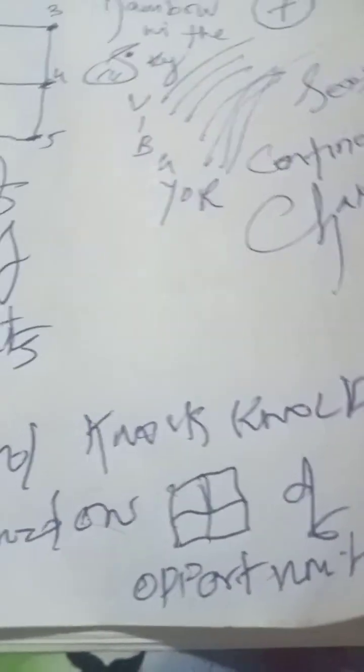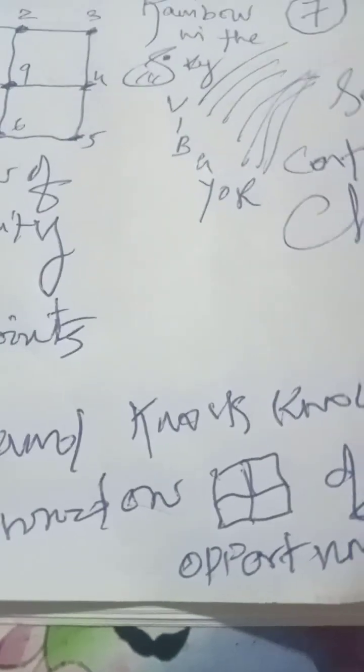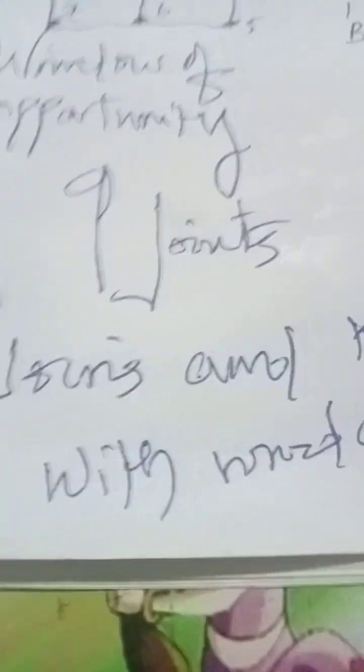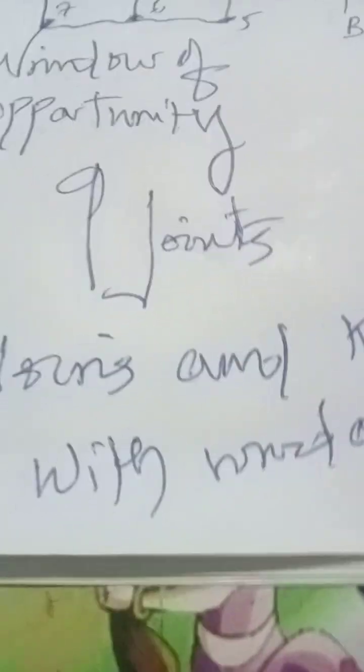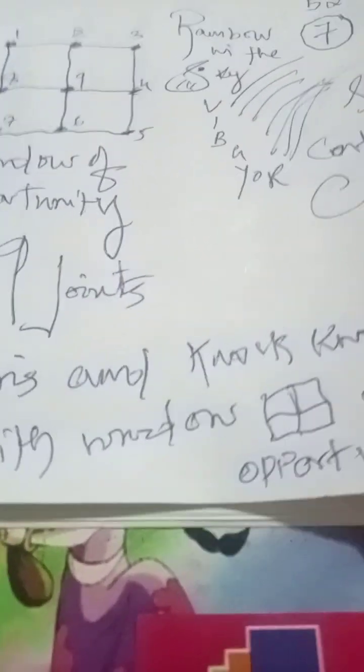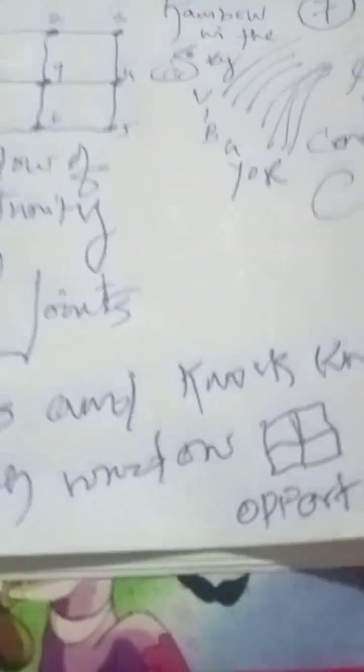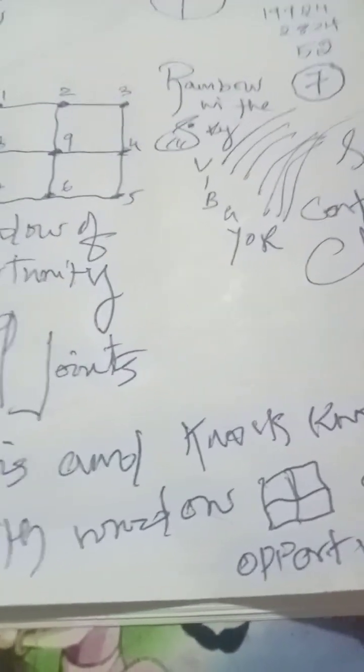What is this nine which gives a knock knock on the window of opportunity? Nine is nothing but the sun. The sun is nine. S-U-N: S is 19, U is 21, 19 plus 21 is 40, and N is 14. So 40 plus 14 is 54. 54, 5 plus 4 is 9.